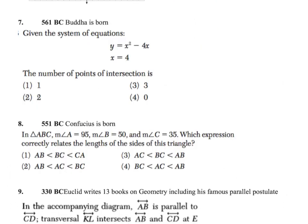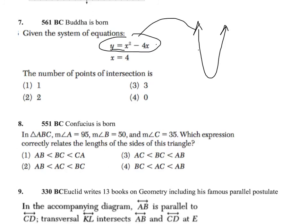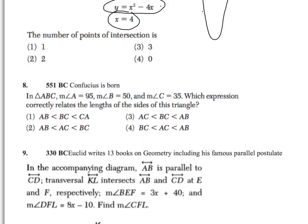For question seven — 561 BC, Buddha is born. This one is a system of two equations: the first equation being a parabola and the second equation being the line x = 4. They want to know how many places the parabola and the line intersect. The line x = 4 is a vertical line. I'll let you consider how many places they would intersect — if I gave you a hint, it would give away the answer.